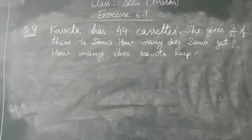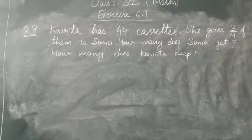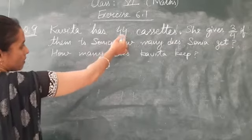Now look at question number 9. Kavita has 44 cassettes. She gave 3 fourths of them to Sonia. How many does Sonia get and how many does Kavita keep?